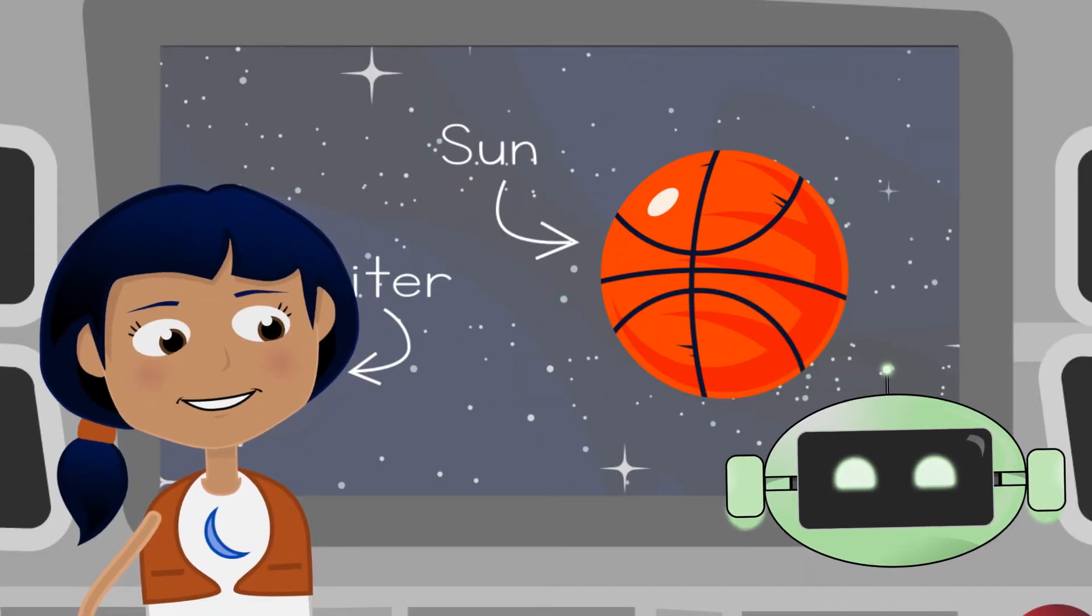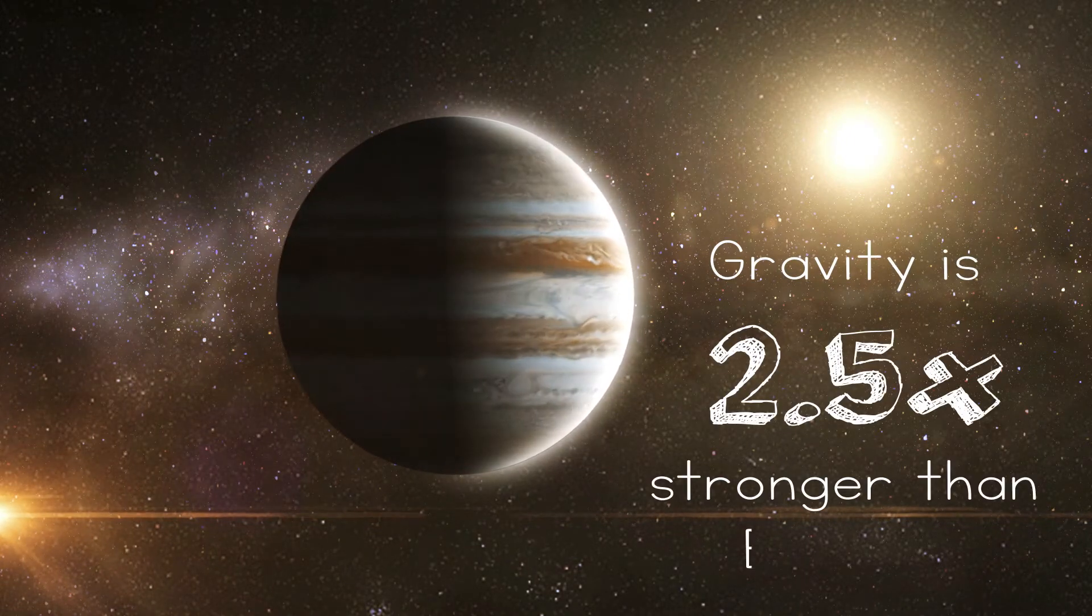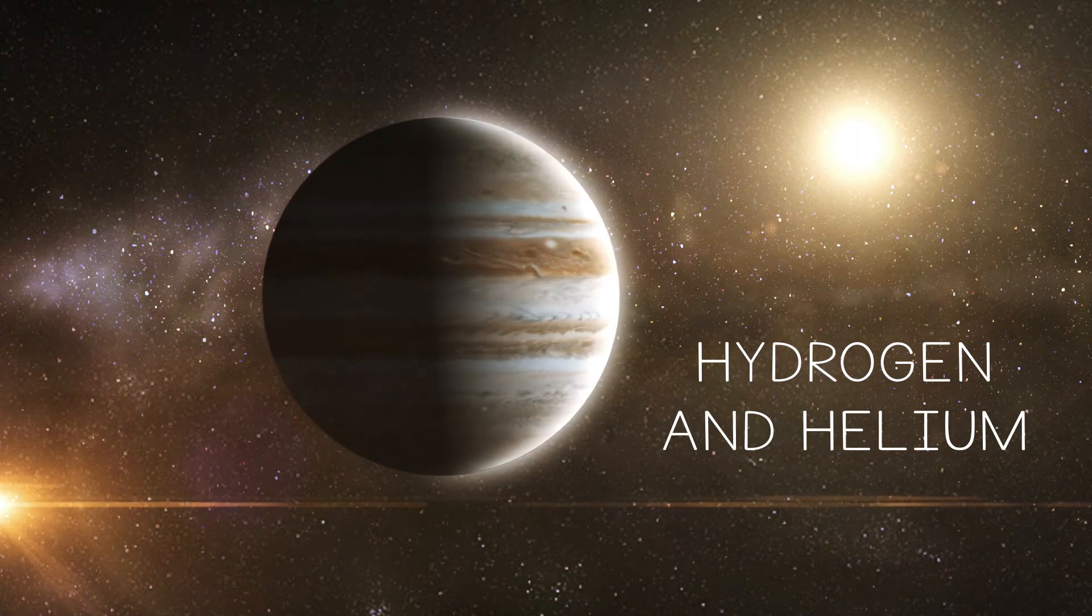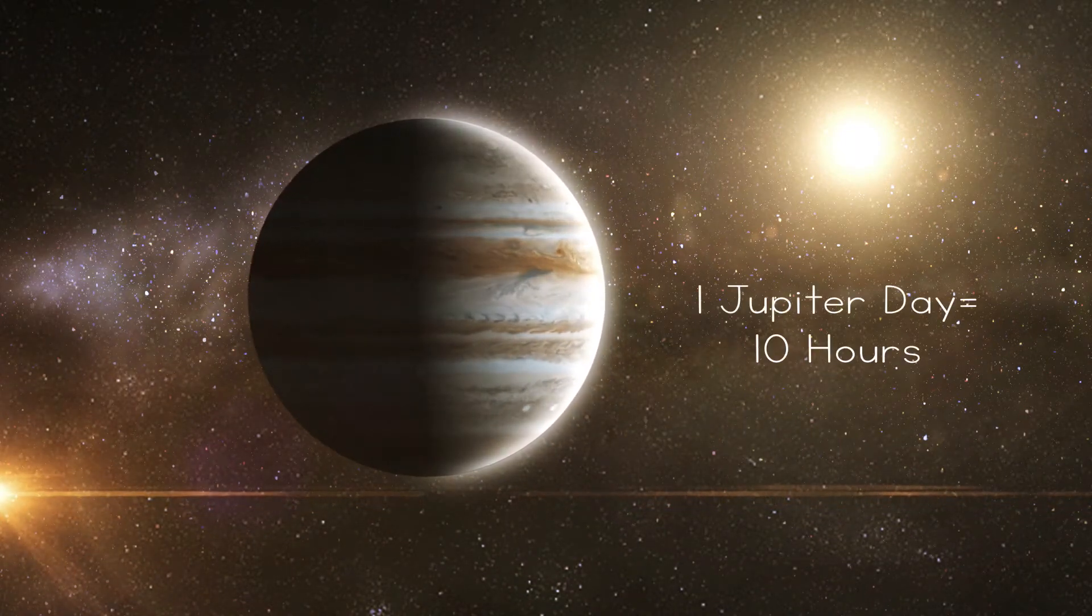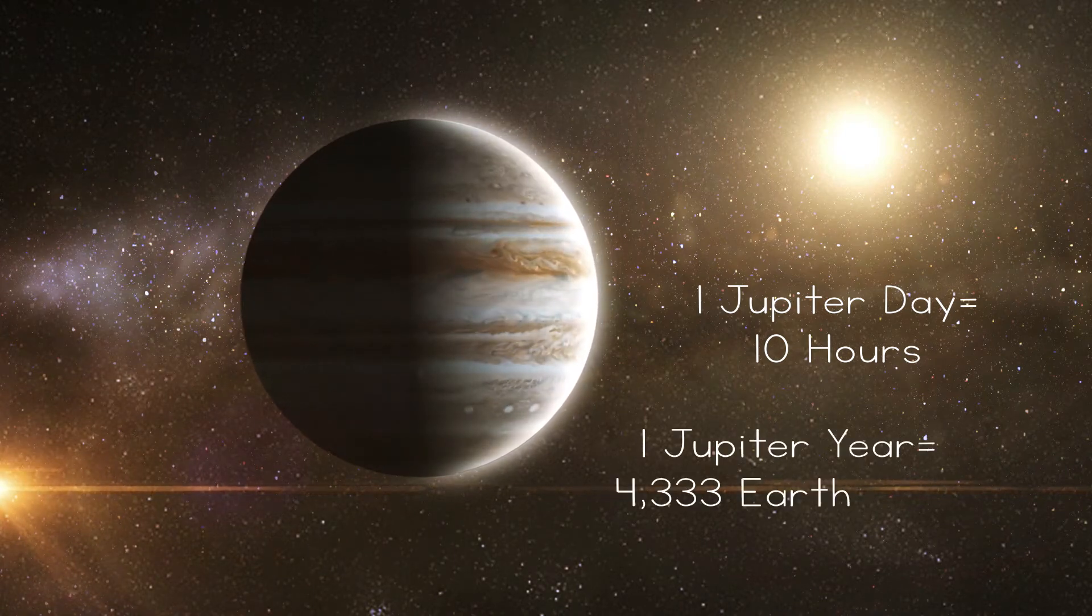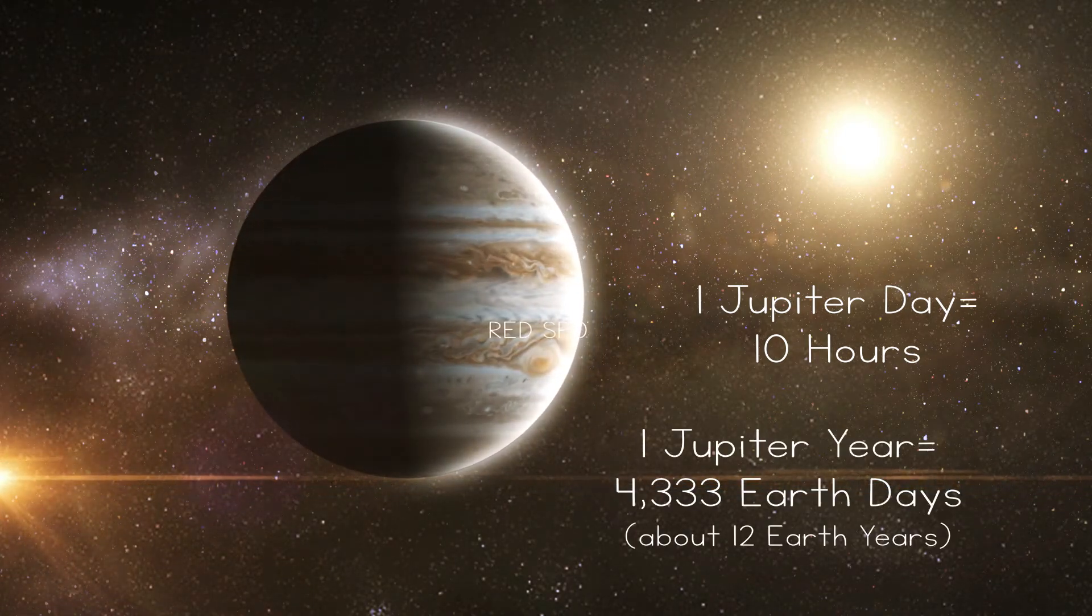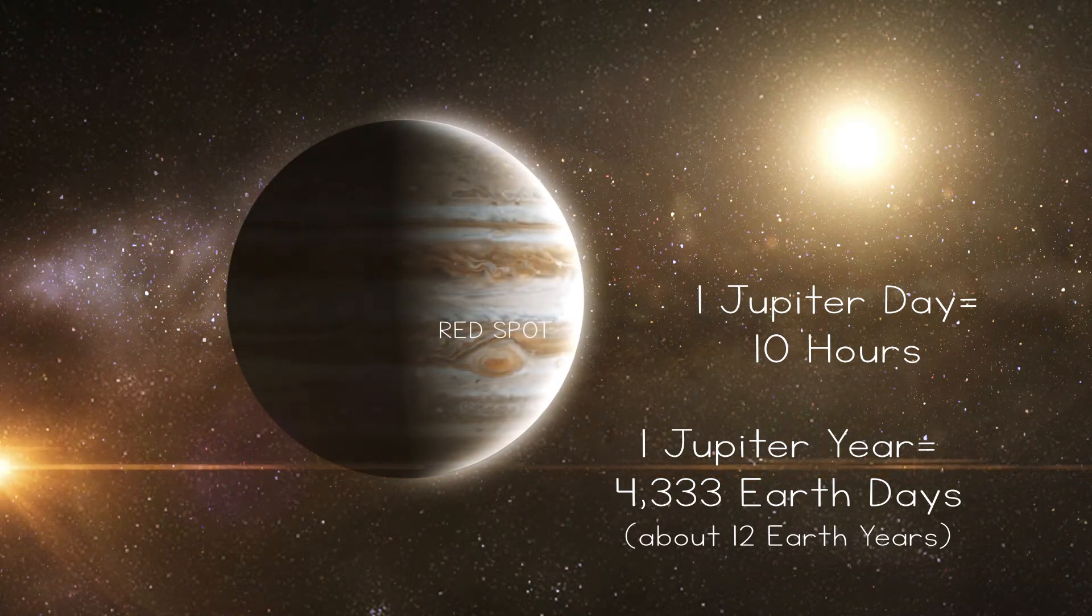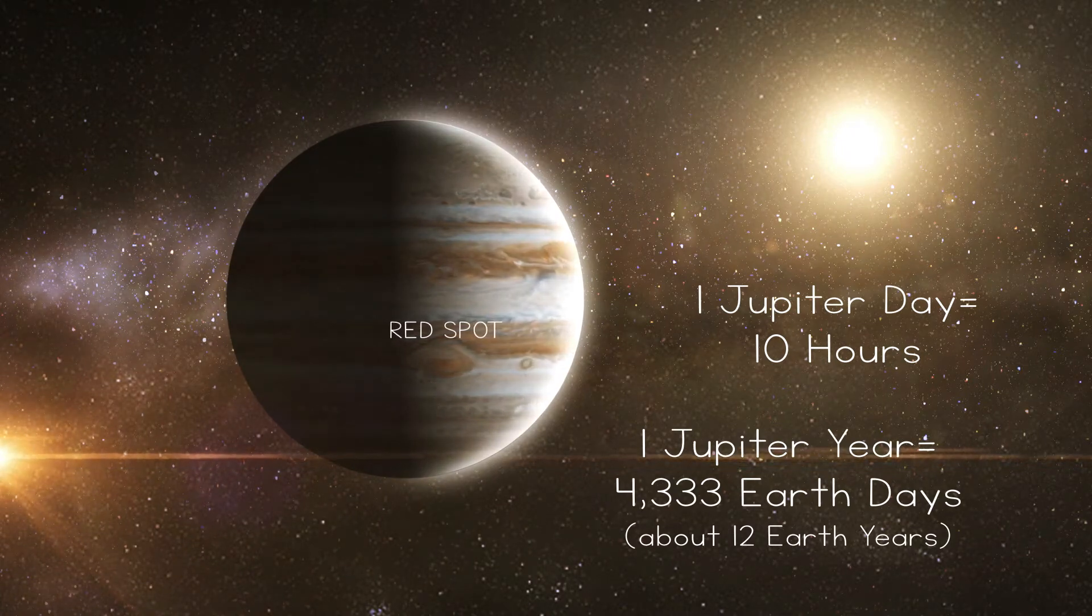Because it's so big, it has a very powerful gravitational pull. Its gravity is two and a half times stronger than Earth's. It's made up of mostly hydrogen and helium. One day on Jupiter is about 10 hours, while its year is much longer. 4,333 Earth days! It also has 53 known moons and is known for its great red spot. This red spot is a huge storm, twice the size of Earth, that has been going on for over 100 years.